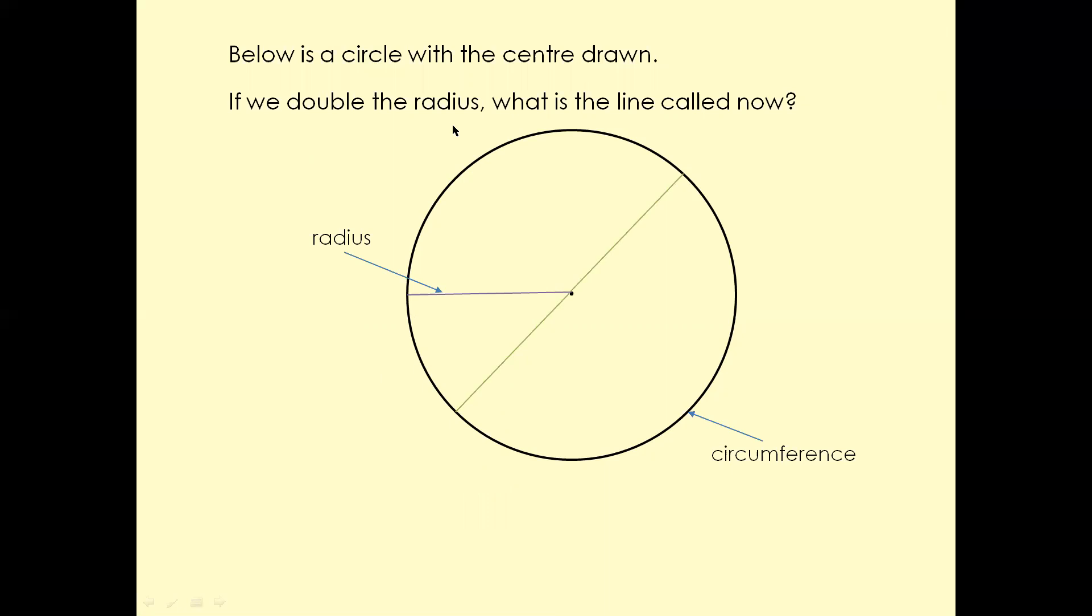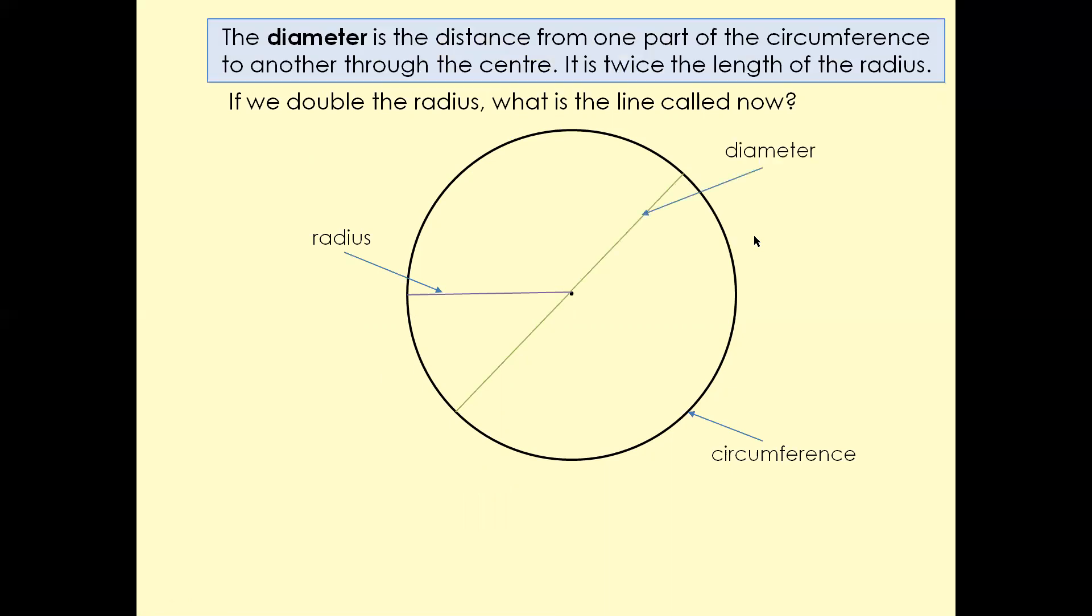If you double the radius, what is the line called now? The answer is diameter. The diameter is the distance from one part of the circumference to another part of the circumference, passing through the center. It's twice the length of the radius.